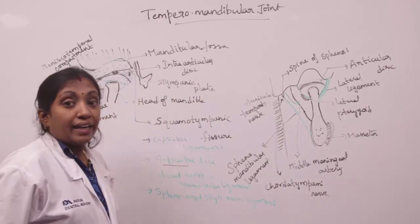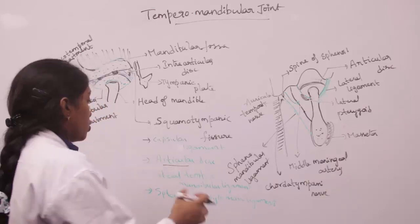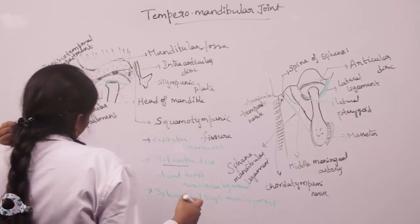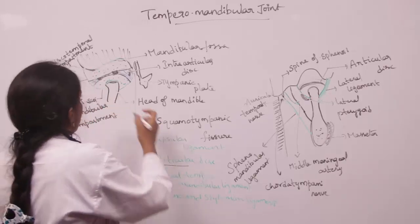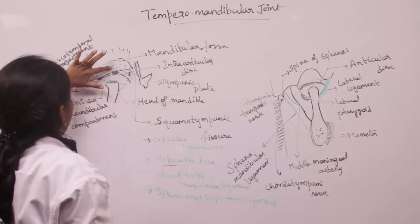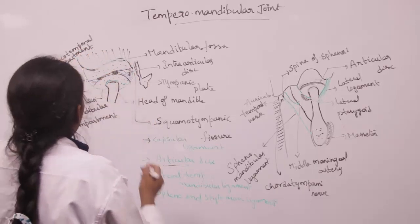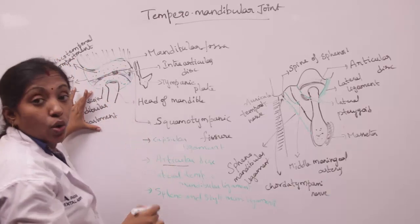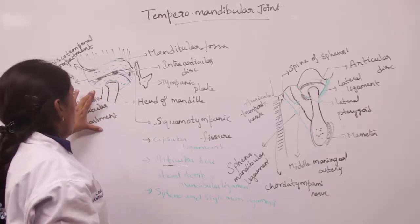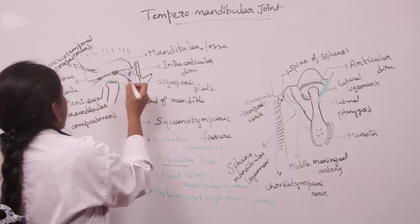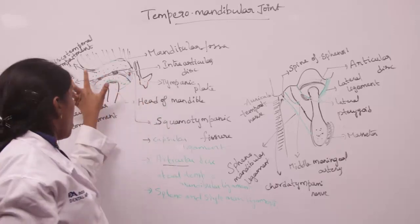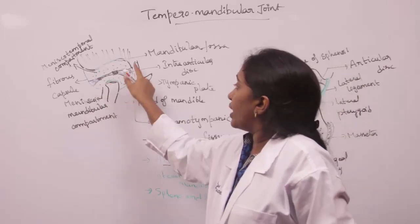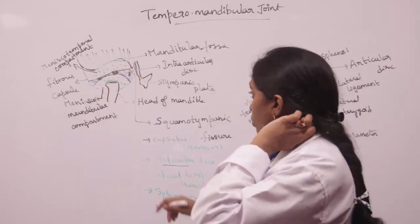The articular disc is a plate of fibrous cartilage which divides the joint into two compartments: the meniscotemporal compartment above and the meniscomandibular compartment below. The articular disc is attached to the periphery of the capsule by thick fibrous bands.